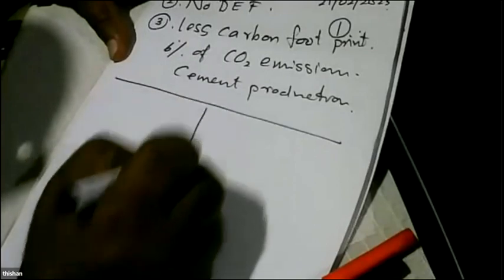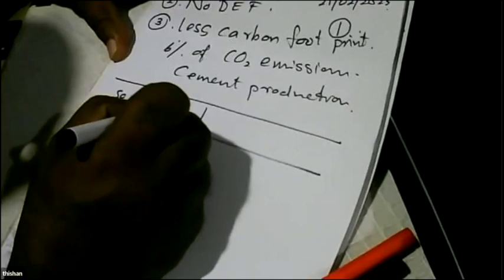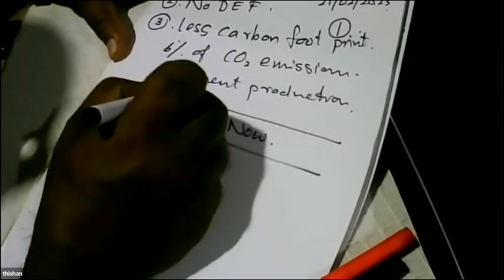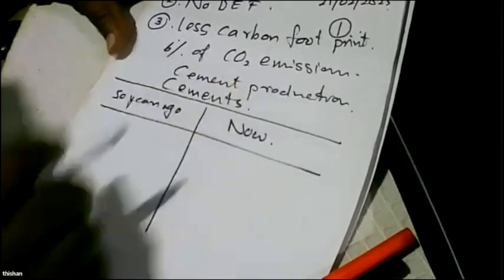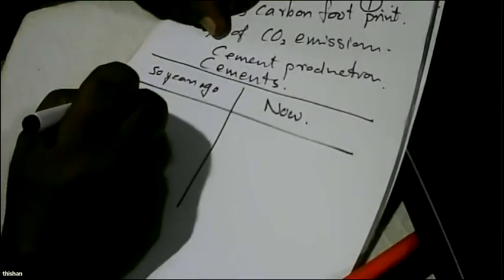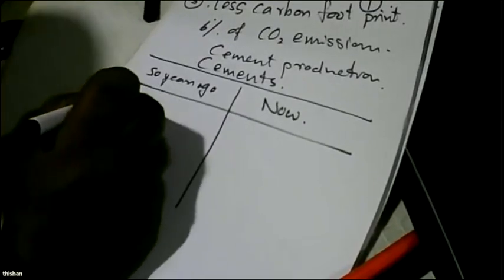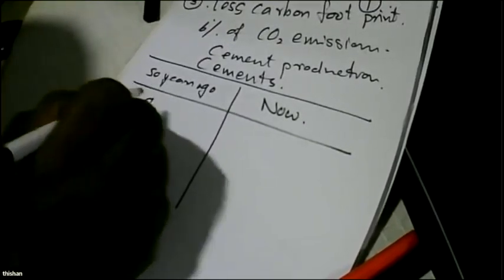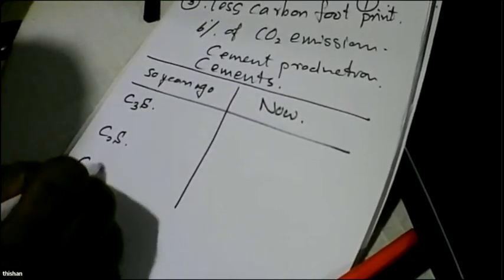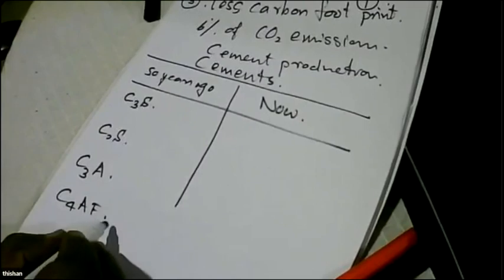To address these challenges, first we look at the types of cements available in Sri Lanka now versus 50 years ago. In cement we get tricalcium silicate (C₃S), dicalcium silicate (C₂S), tricalcium aluminate (C₃A), and tetracalcium aluminoferrite (C₄AF). The last is an impurity.